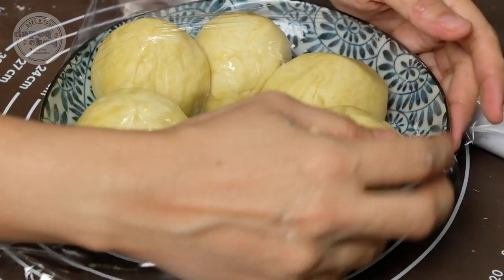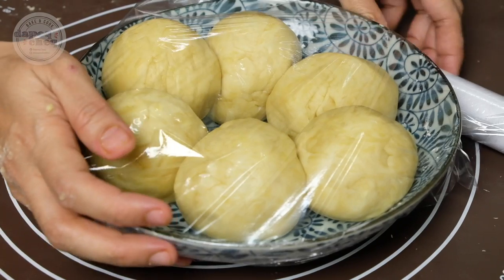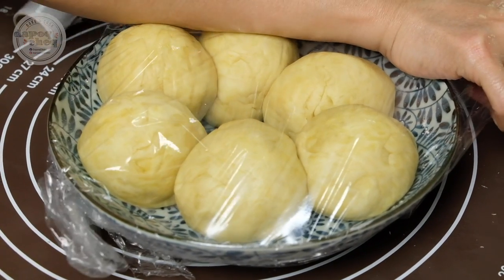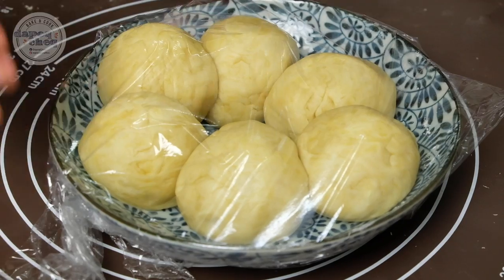Yang ni tutup lah, kalau tak nanti dia keras. Kalau tak ada plastik ni, masuk lah tupperware senang. Yang ni kita rehat sat dalam 20 minit. Sambil-sambil tu kita boleh buat dough minyak pula.